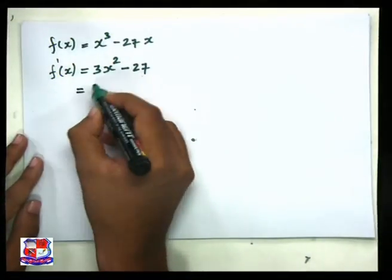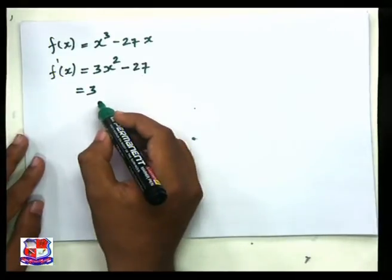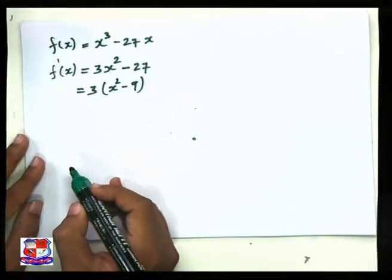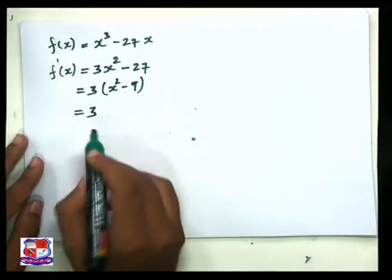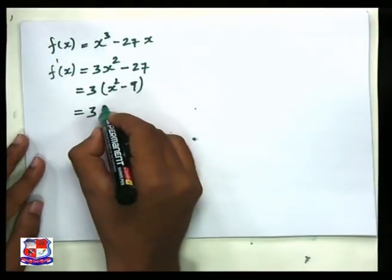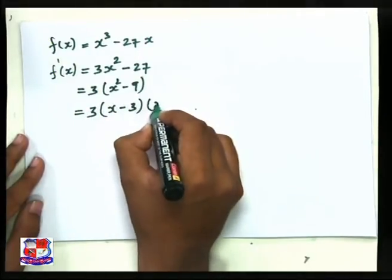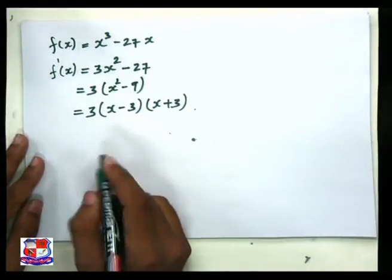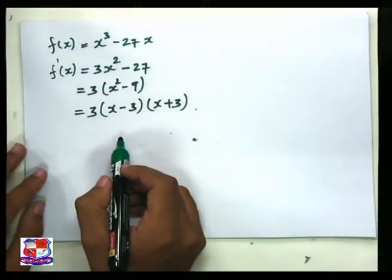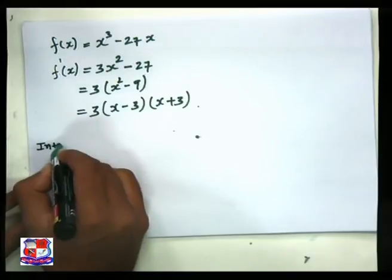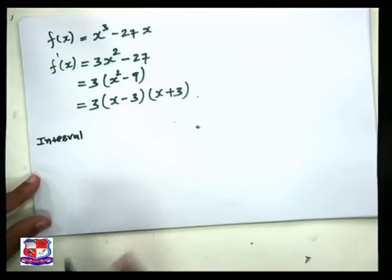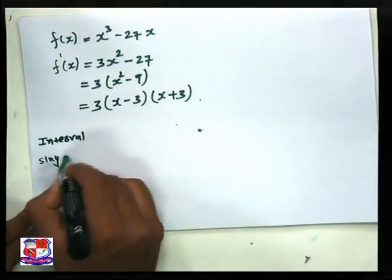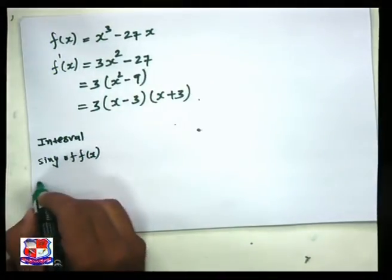We factor: f′(x) = 3(x² − 9) = 3(x − 3)(x + 3). Now we are finding such intervals by making a table. The columns are: interval, sign of f′(x), and behavior of f.